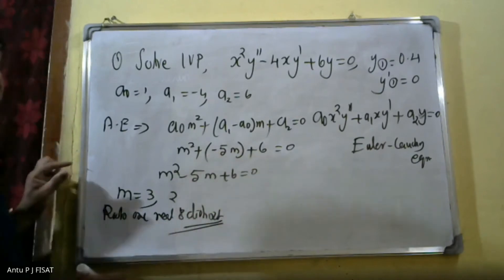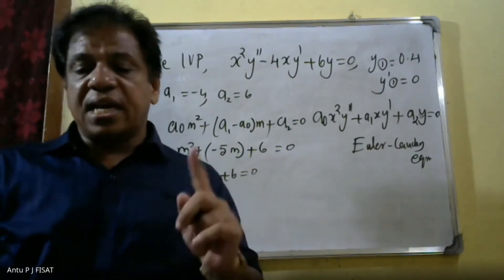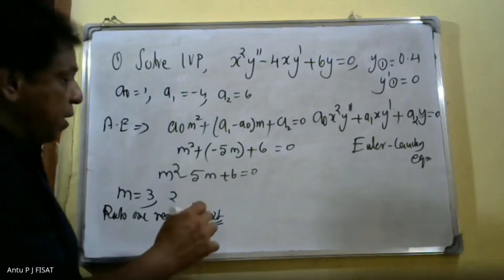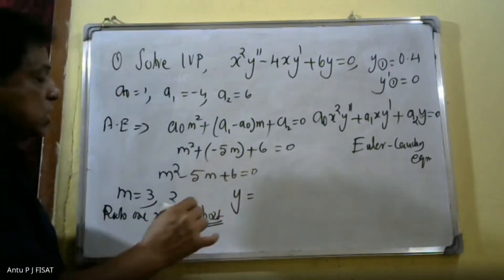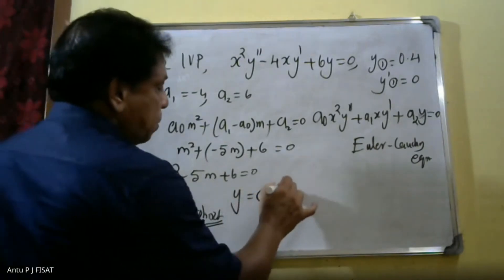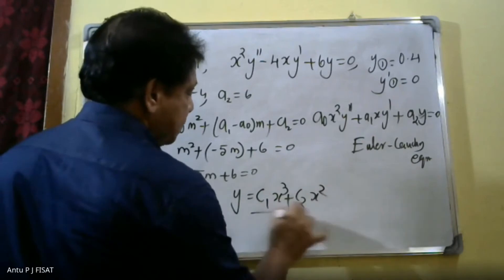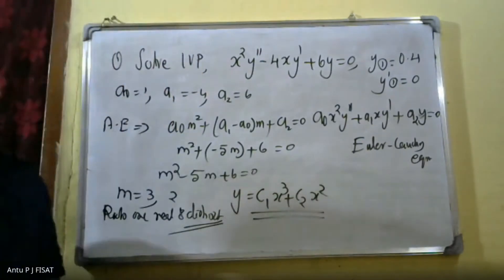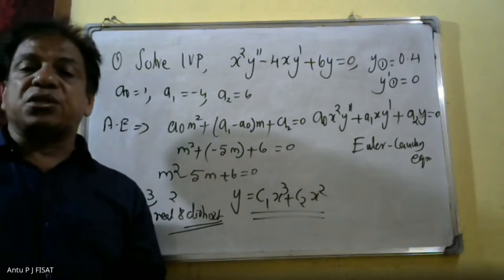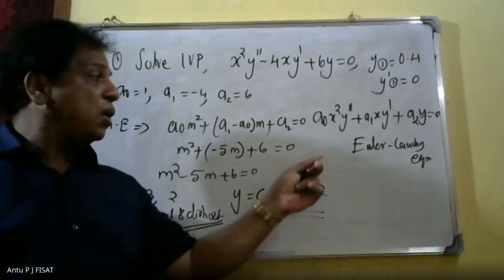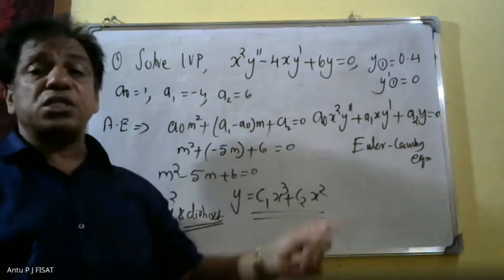Since the roots are real and distinct, we take Case 1. The general solution is y = c₁x³ + c₂x², which is the solution of x²y'' − 4xy' + 6y = 0.